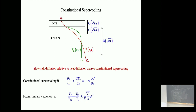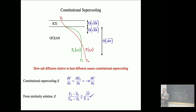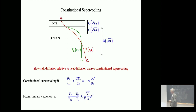The consequence of constitutional supercooling is morphological instability. On Monday I took you through a detailed stability analysis to show that growth into a supercooled melt was morphologically unstable. If we have constitutional supercooling, we will get morphological instability. That's not an absolutely precise statement, but it's a good enough statement for our purposes.